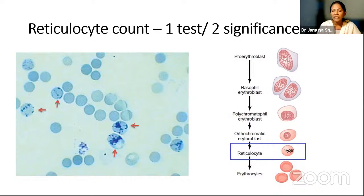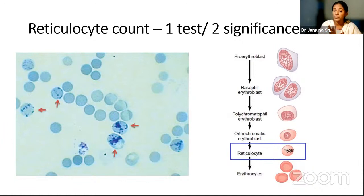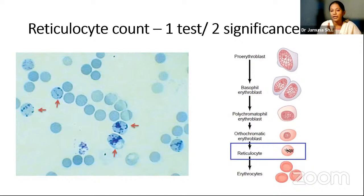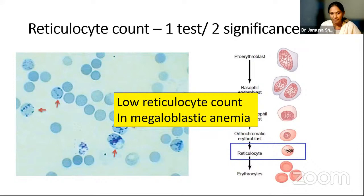The other significance of reticulocyte count: the moment you treat the person with vitamin B12 or folate (depending on etiology), there will be a rapid outpouring of reticulocytes. You repeat the reticulocyte count on day five or within a week — a dramatic increase confirms your diagnosis. In a resource-poor setting, you can confirm diagnosis based on this reticulocyte response. If there is no outpouring within five days or a week of starting B12 therapy, you need to reconsider your diagnosis. Low reticulocyte count is the expected finding in megaloblastic anemia.